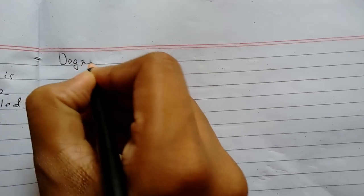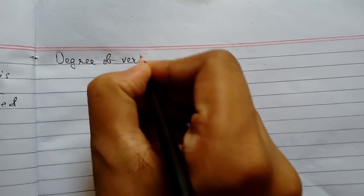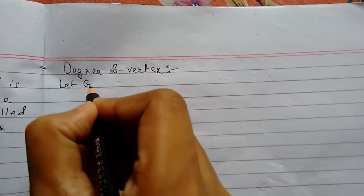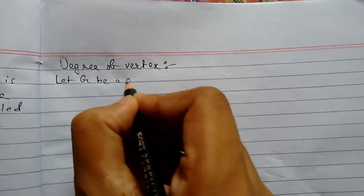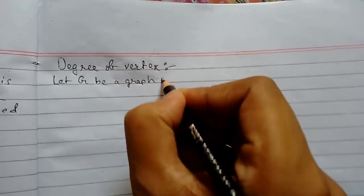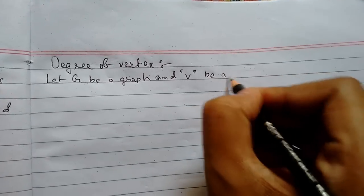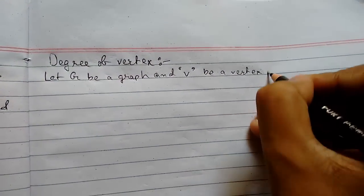Degree of vertex. So let me first write the definition and I will explain it. Let G be a graph and V be a vertex in G.